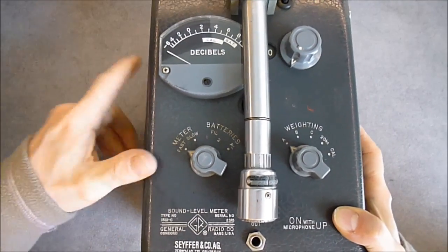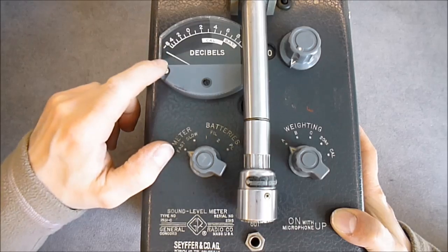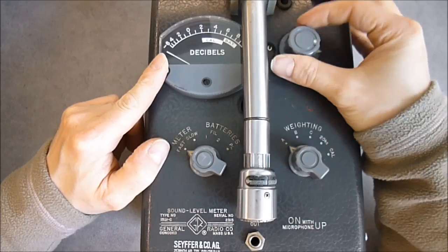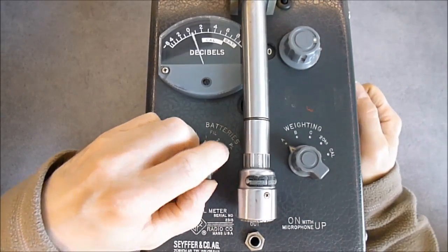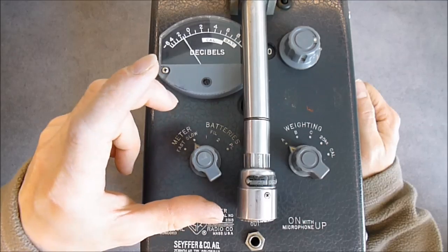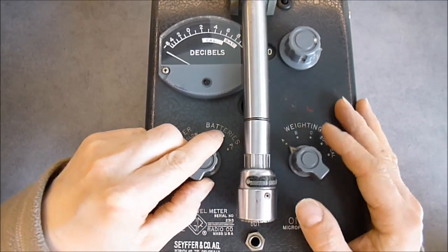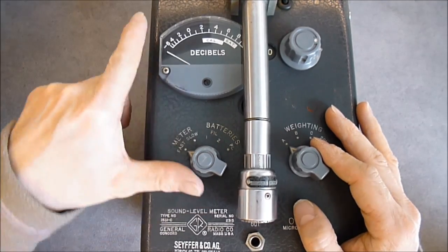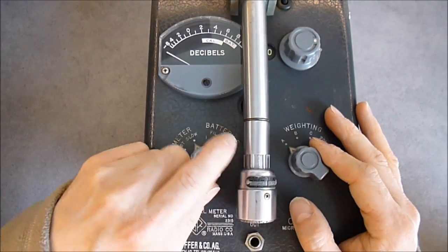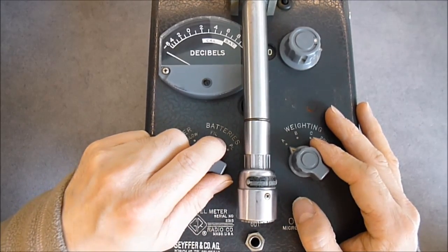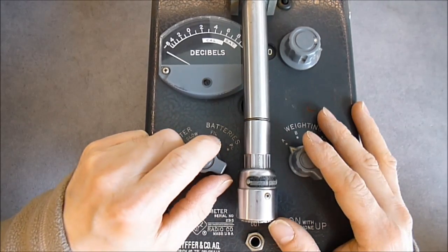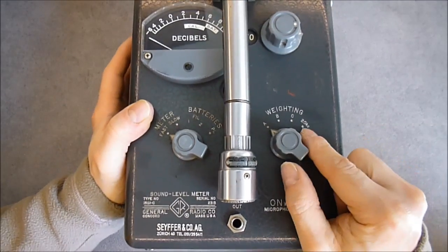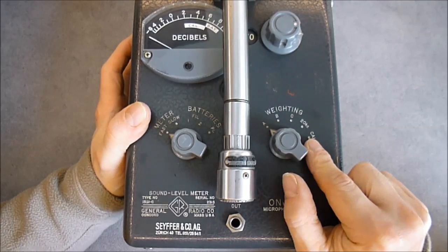It has a decibel meter indicator here, some rotary thing here, main function switch here. For some reason there is no battery in it but when I move this button, the meter triggers. I do not know what is going on here, something must be accumulating a charge maybe. And oddly enough it seems it has a weighting function also.